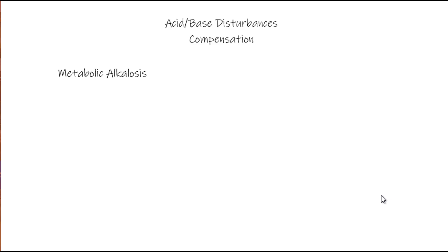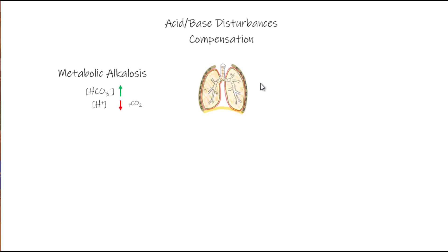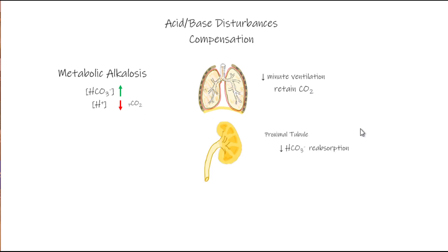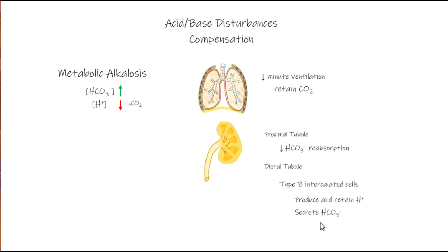Finally, our fourth example of the pure acid-base imbalances — be it respiratory or metabolic — is our metabolic alkalosis. With a metabolic alkalosis, we have a relative excess of bicarb, or a deficiency of hydrogen ions or CO2. So with a metabolic alkalosis, we want to decrease minute ventilation, which will help us to retain or increase CO2. Our kidneys are going to help out by decreasing the reabsorption or reclamation of bicarbonate in the proximal tubule. In the distal tubule, our type B intercalated cells are going to work — they're going to help us produce and retain hydrogen ions and increase the secretion of bicarbonate. With metabolic alkalosis, the lungs help out by retaining CO2, and the kidneys help out by the way we deal with bicarbonate.